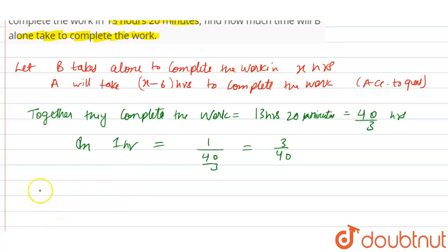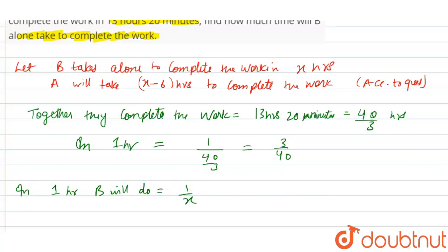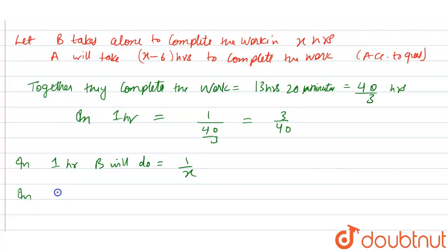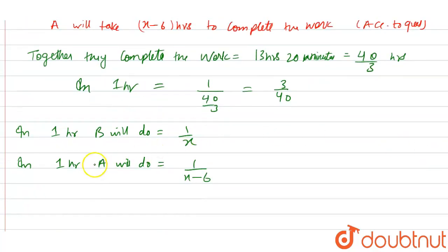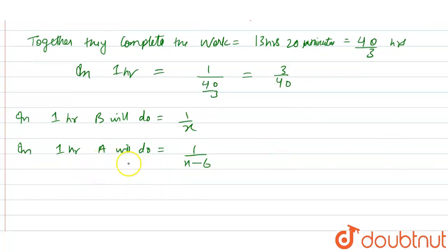We know that if B takes x hours alone, in 1 hour B will do 1 by x amount of work. And in 1 hour, A will do 1 upon (x minus 6) amount of work. So according to the condition, in 1 hour they do 1 upon x and 1 upon (x minus 6) times of work, and if we add them it will be equal to 3 by 40.